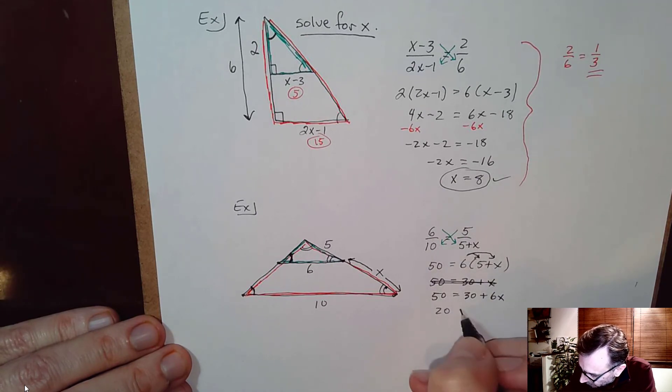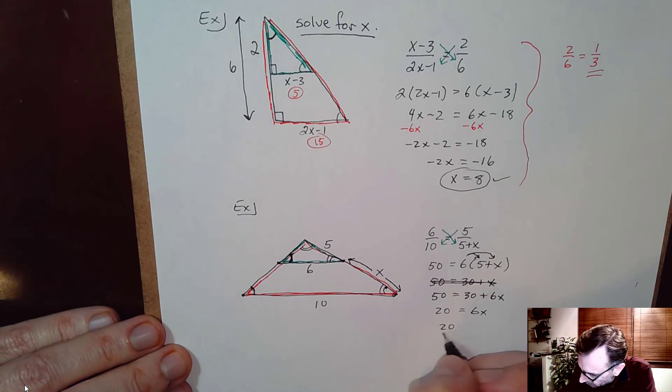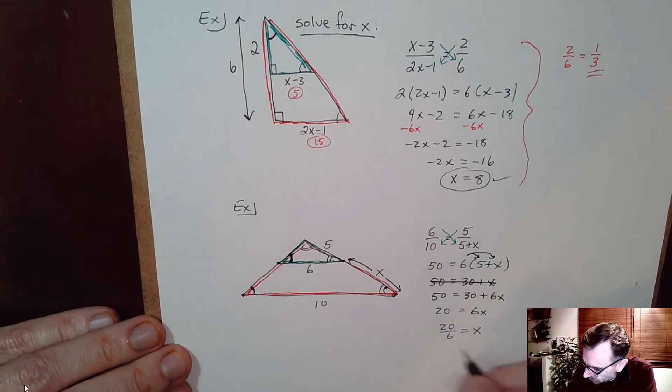And then subtracting 30 we get 20 equals 6X. And then dividing by 6 we get 20 over 6 equals X. Now just reducing we have, reduced by 2 we're going to get 10 thirds. 10 thirds equals X.